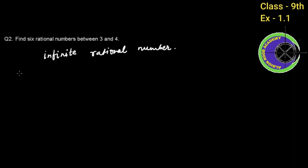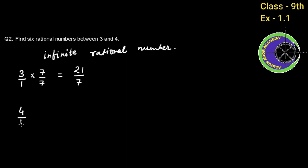How do we solve it? You have 3, and in the denominator it is 1. So we will multiply and divide by 7. Three sevens are 21, and one seven is 7, so 3 becomes 21 by 7. For 4, the denominator is 1, and four sevens are 28, so 4 becomes 28 by 7.